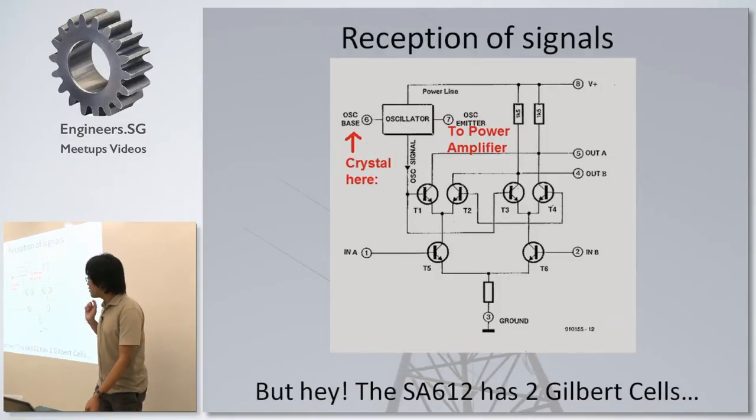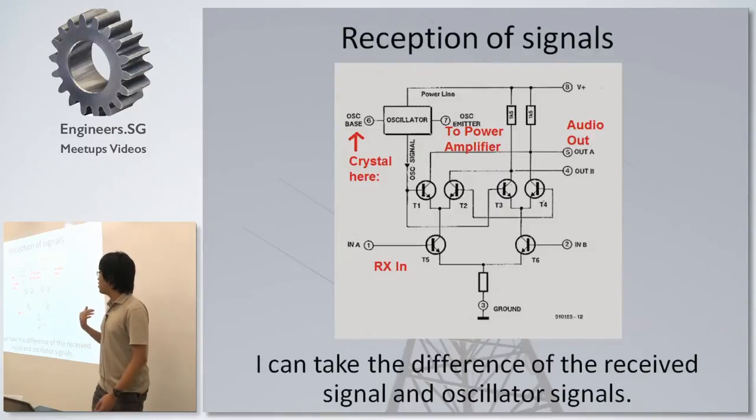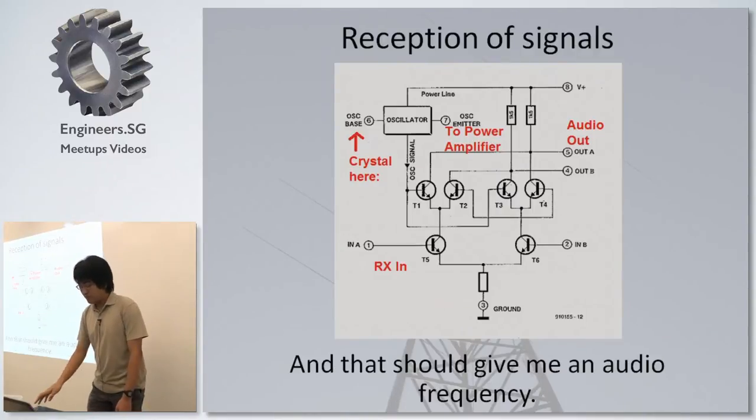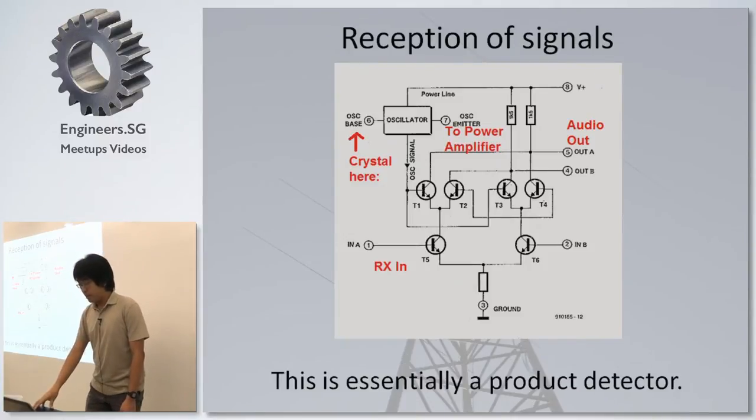But if I want to receive a signal, since I have two Gilbert cells here, I could take the difference of the signal, of the received signal from my antenna, and the oscillator input, and that will give me my audio frequency. I do have a little bit offset though, but that will give me my audio frequency, and it essentially is just a product detector.